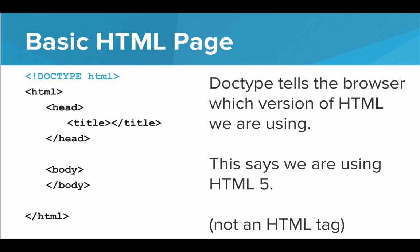Here we have the DOCTYPE. DOCTYPE tells the browser which version of HTML we are using. This tag says that we're using HTML5. Note that this is not an actual HTML tag — it's just a declaration at the top of the file telling the browser which version of HTML we're using. You'll need this at the top of all of your HTML pages.